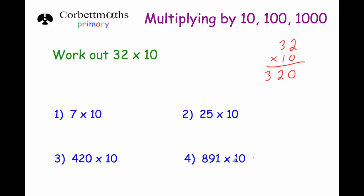Now you could use the column method for all of these multiplications — 7 multiplied by 10, 25 multiplied by 10, 420 multiplied by 10, 801 multiplied by 10. But there's a much quicker, simpler way. When you multiply by 10, each of the digits gets 10 times bigger. The 30 becomes 300, and the 2 units becomes 20. We get a 0 at the end as a placeholder, as long as the number is a whole number.